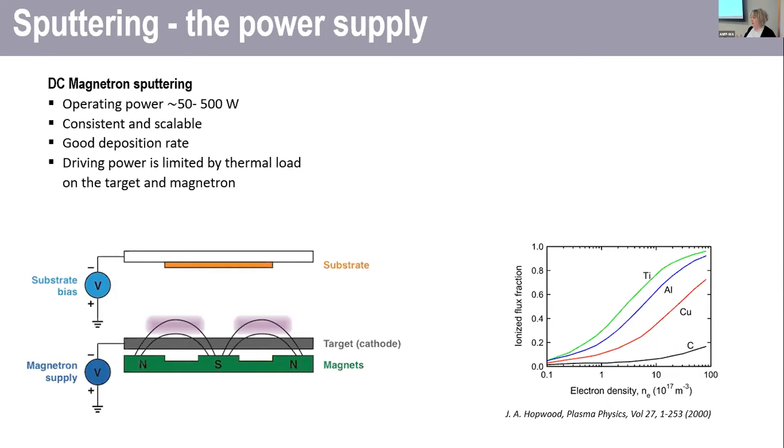The reason you want an ionized plasma is so that you can control the microstructure using perhaps a substrate bias, as is shown here at the top. So you're applying a substrate bias to whatever you're growing the film on, this allows you to control the energy of whatever is incoming.